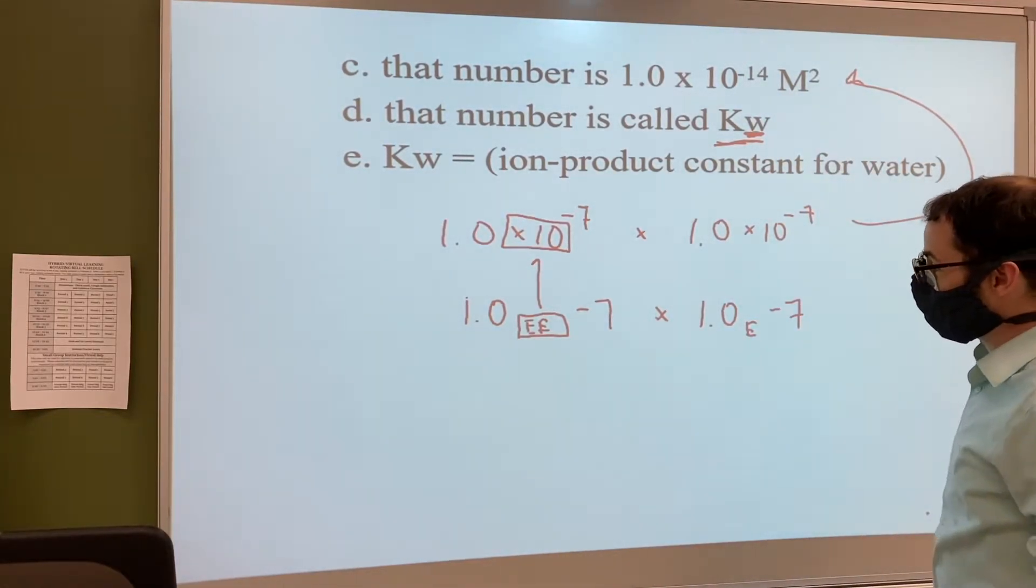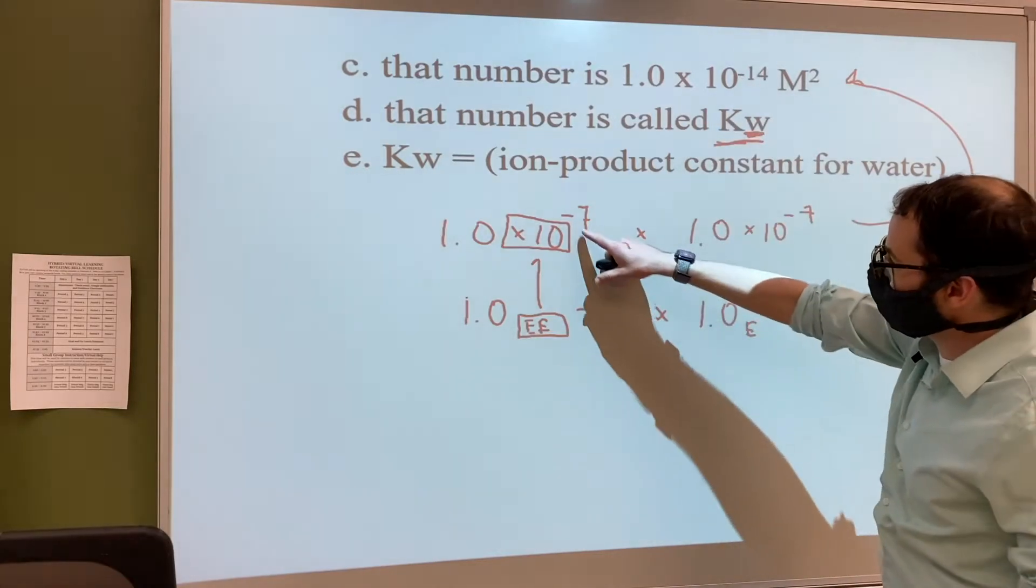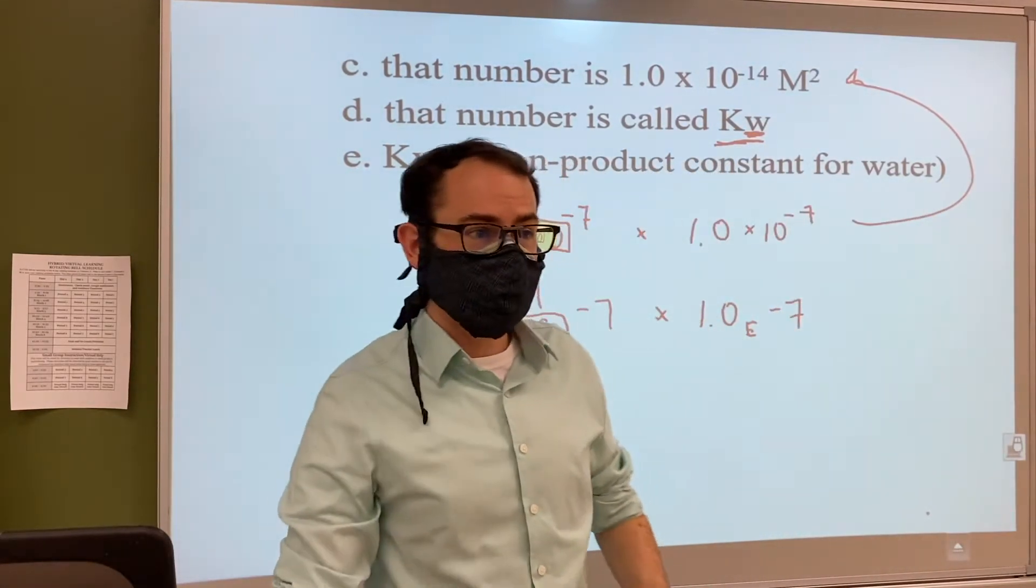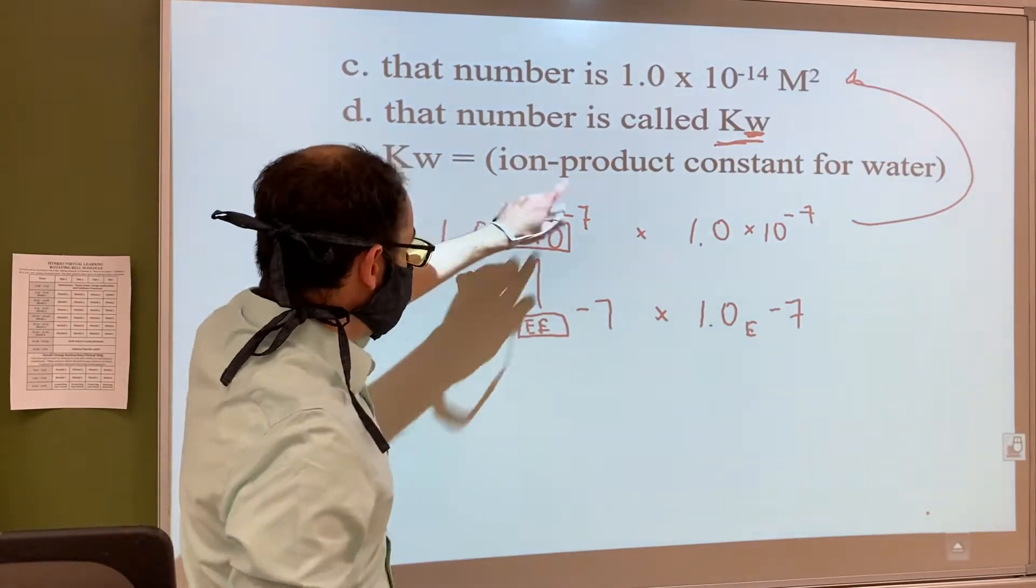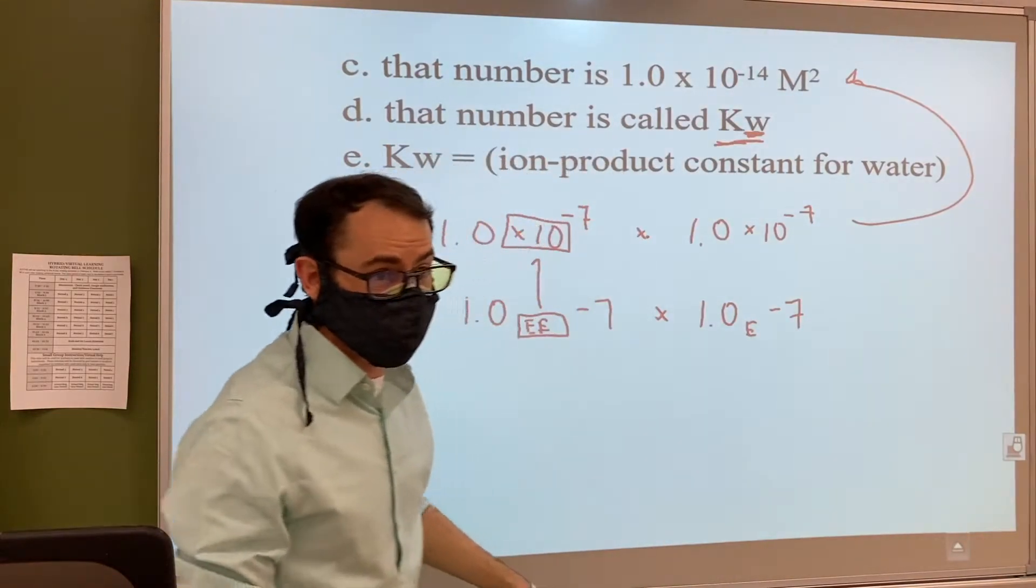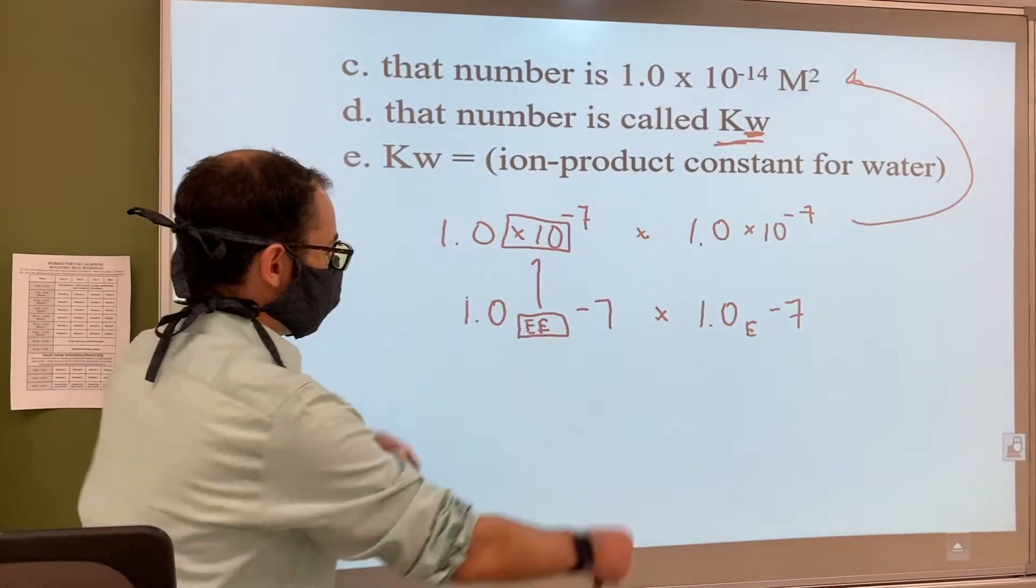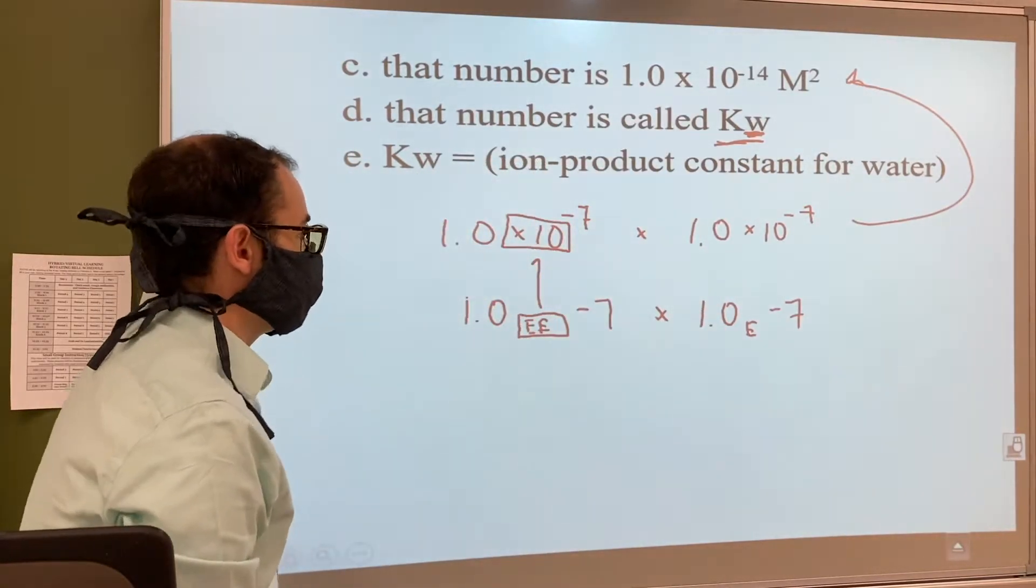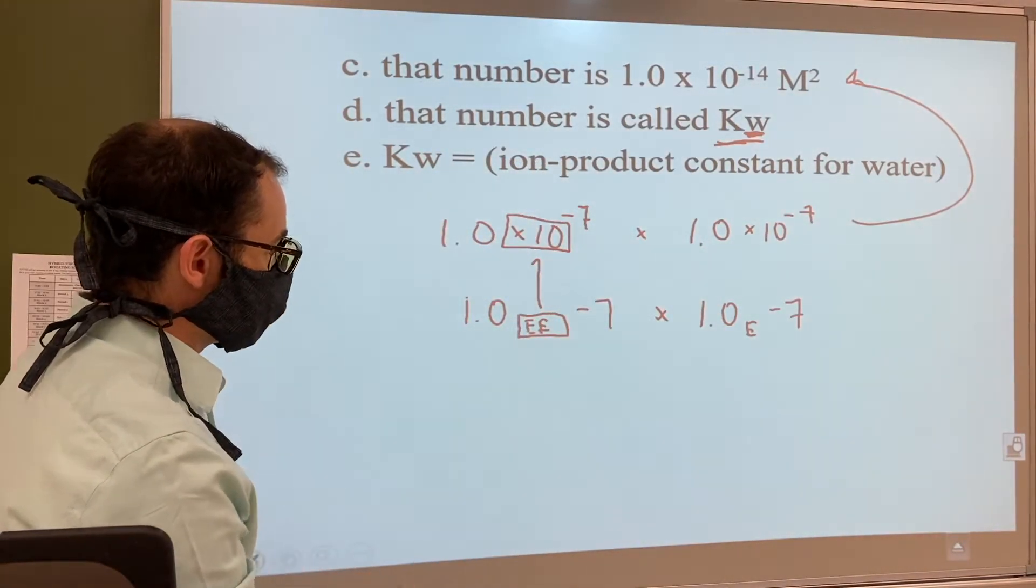When we multiply these together we get 1.0 × 10^-14. Another hint: when you're multiplying exponents you add them together, so you can do this one in your head. Negative 7 plus another negative 7 gives you negative 14. Then you multiply these two together as well, and that still gives you a 1. There's a little mental math you can use for figuring that out.